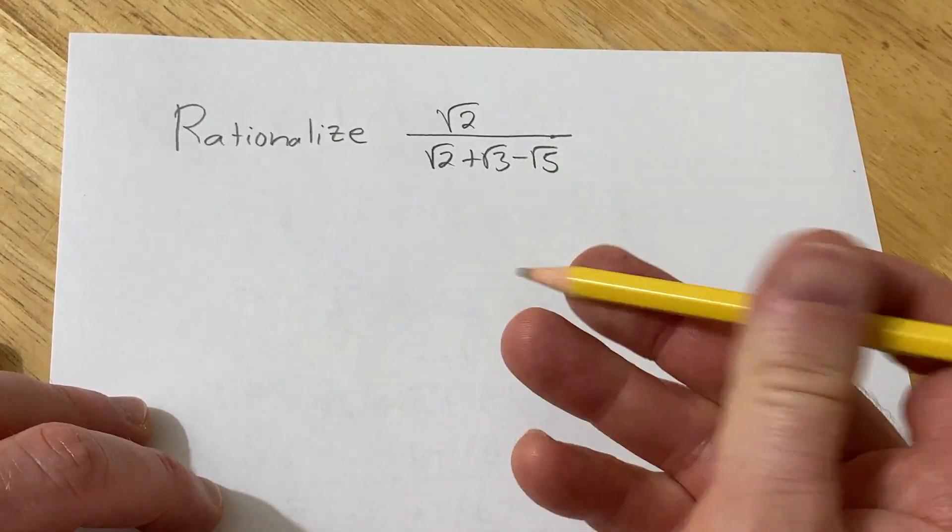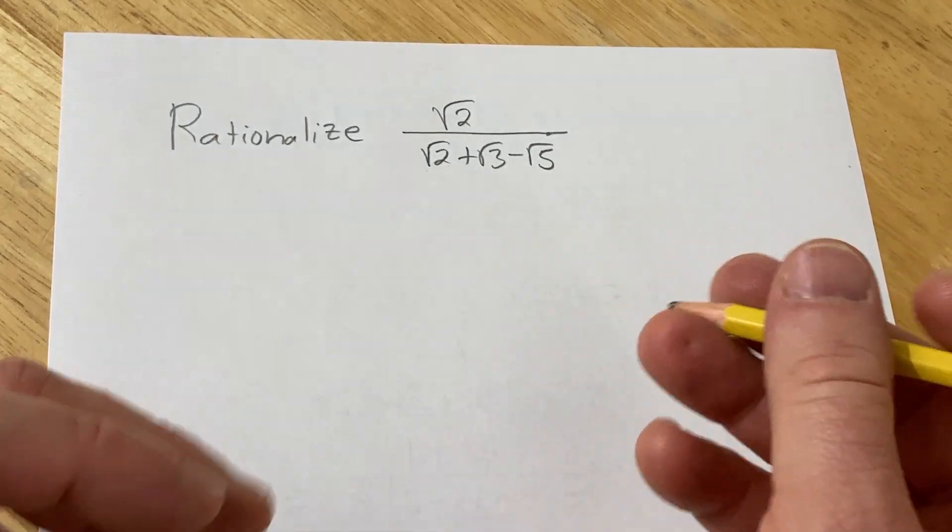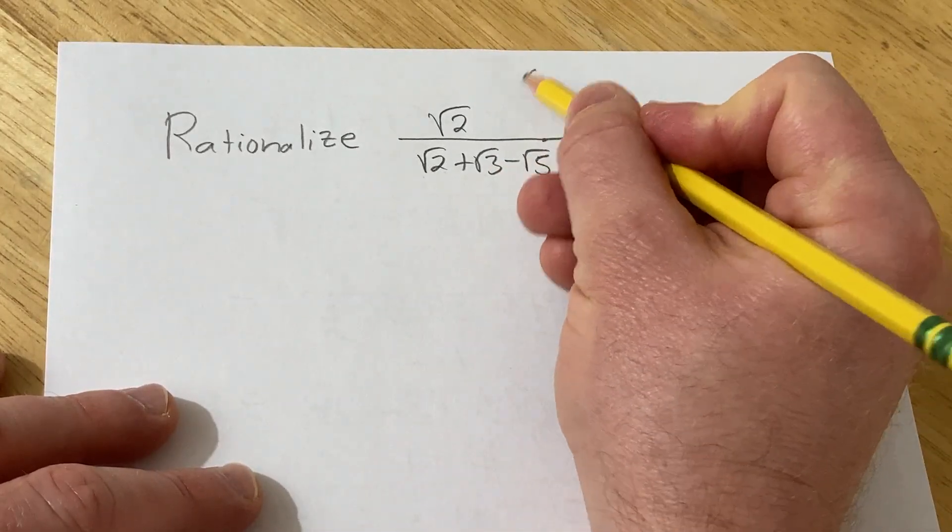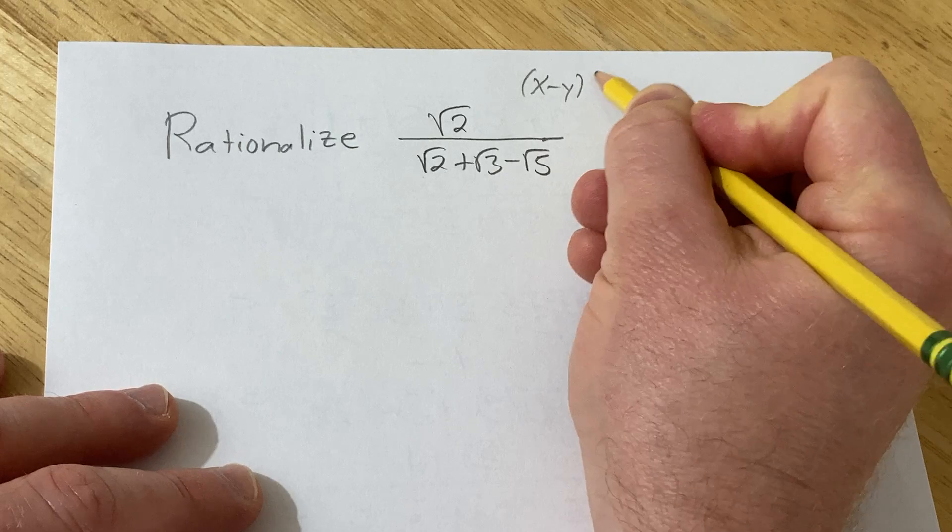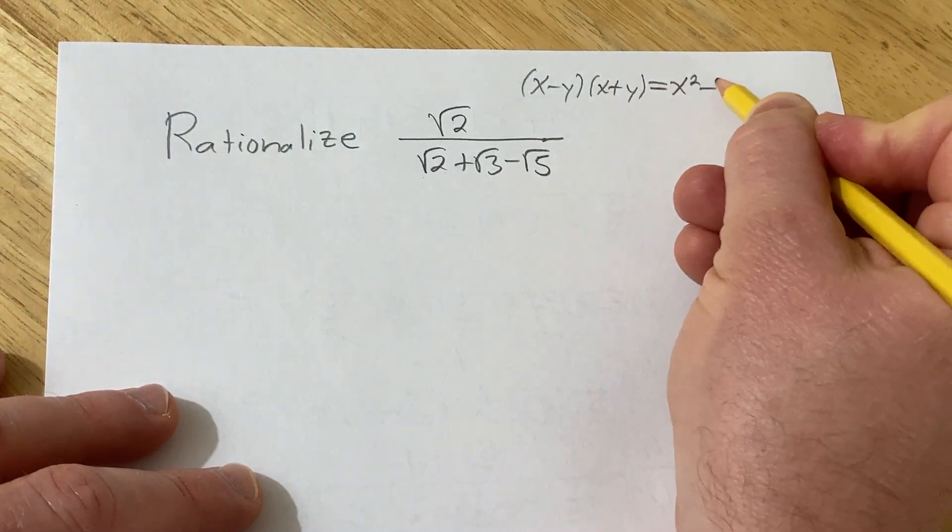To do this problem we're basically going to use the difference of squares formula over and over again. That's really the key technique and we're going to multiply by the conjugate. So the difference of squares formula, recall, says if you have x minus y times x plus y, this is the same thing as x squared minus y squared.